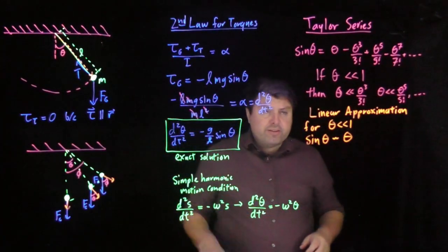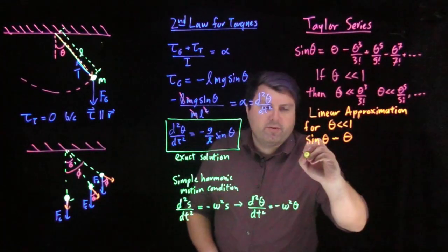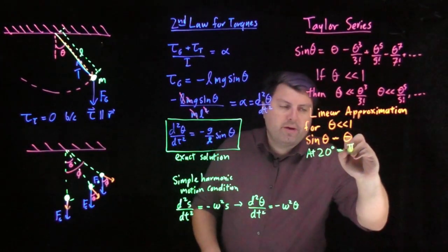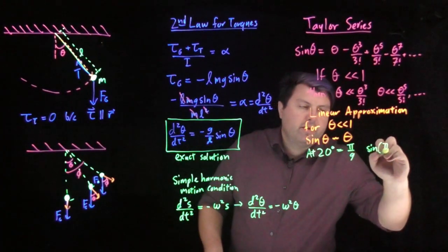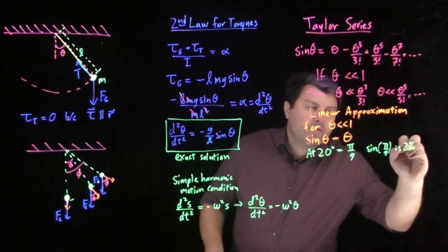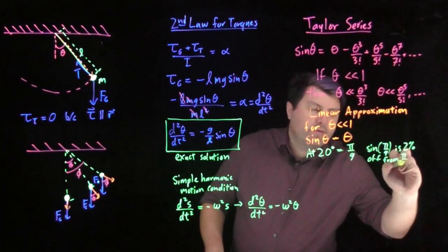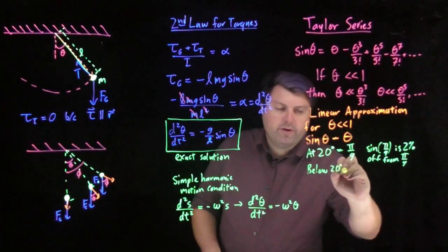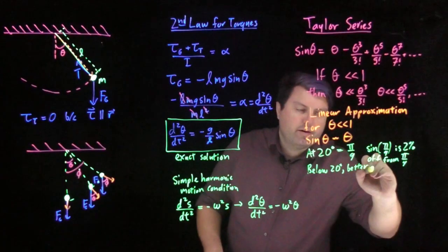Now, how good is this approximation? So this mostly kind of taps out around 20 degrees, but we'll say at 20 degrees, which is equal to pi divided by nine, sine of pi divided by nine is 2% off from pi over nine. And then below 20 degrees, then we have a better approximation.